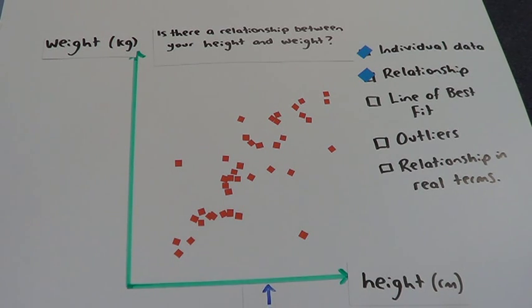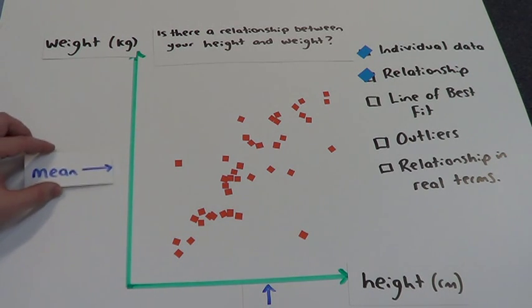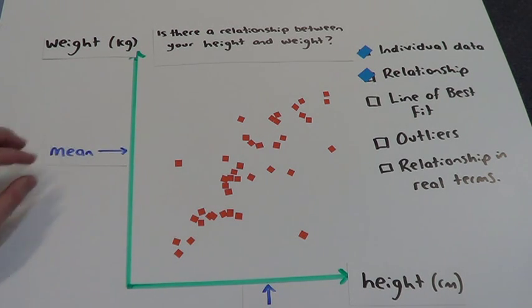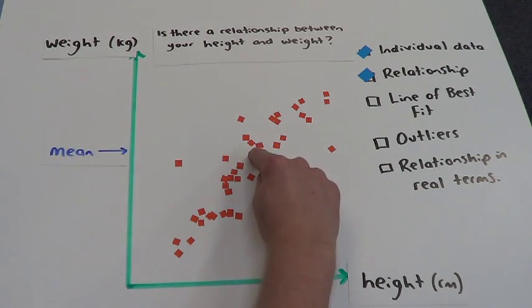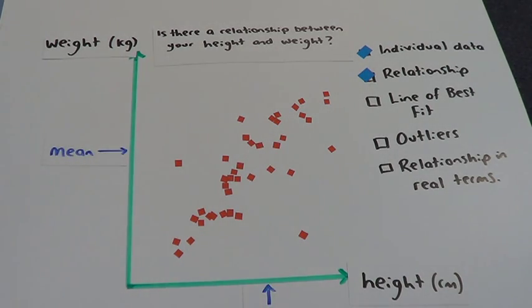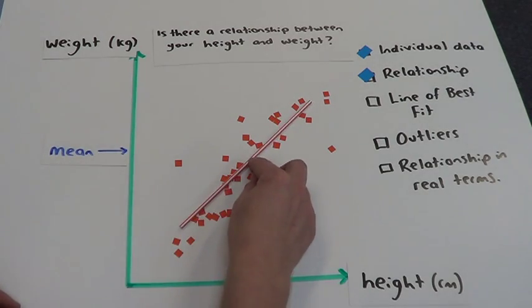Since I have 30 odd weights I can find out what the average of those weights are. So lying in the middle of my graph, somewhere around about here, is the average of my two variables. And so for these, that is where I'm going to anchor my line of best fit.